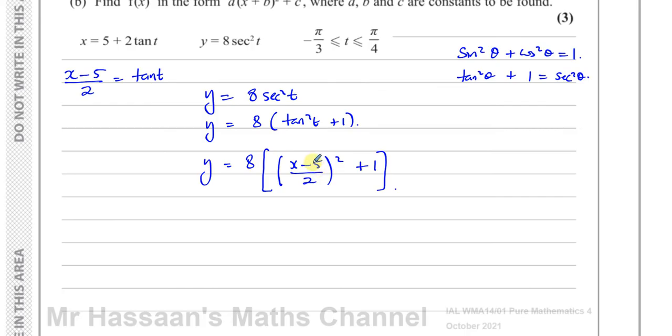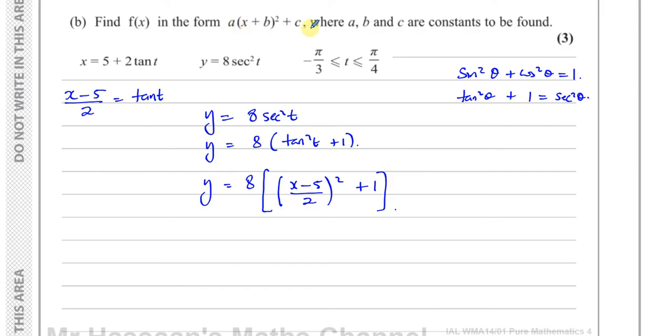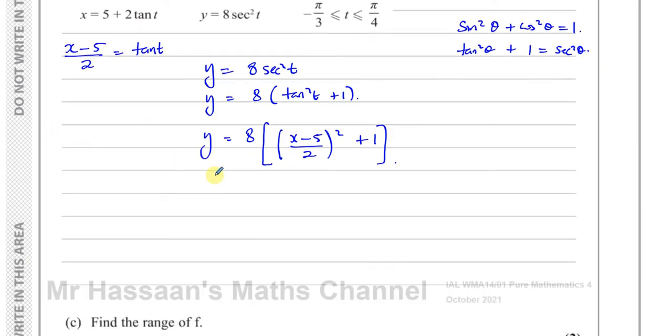So if I replace the tan squared t, because the whole of it is squared, including the 2 underneath, with x minus 5 over 2 all squared, and I've got plus 1, I have now eliminated the t from my equation. I've got now y in terms of x, but I want to just simplify it. So what I'm going to do is I'm going to multiply by that 8 both those terms. That will be x minus 5 squared over 4, and 8 times 1 is 8. So almost there, the 4 cancels with the 8 gives you 2. So you have y equals 2 times x minus 5 squared plus 8.